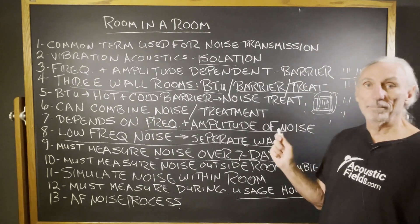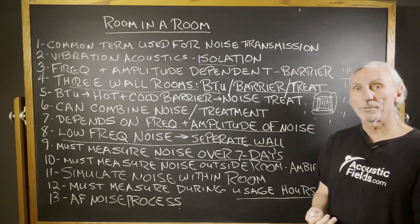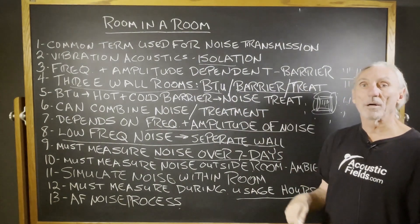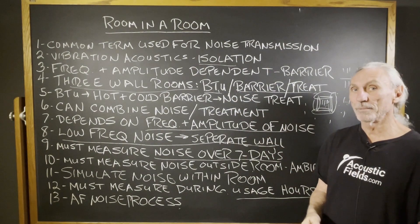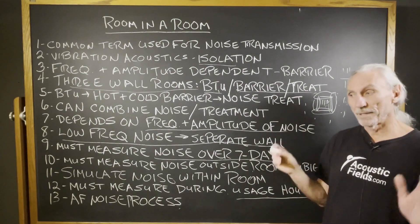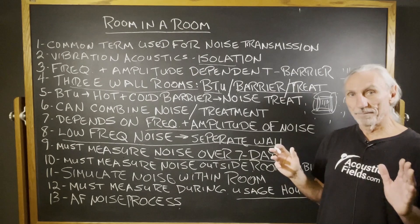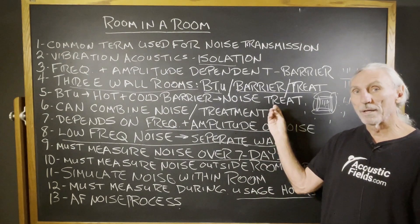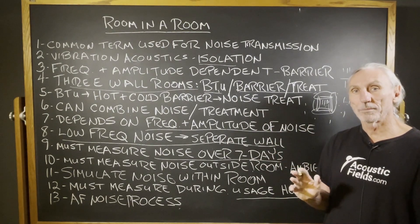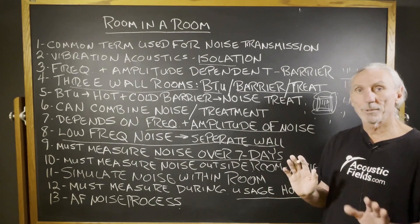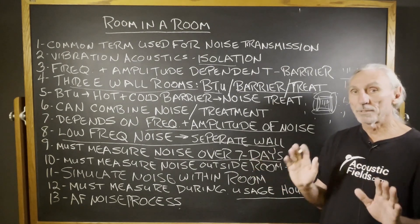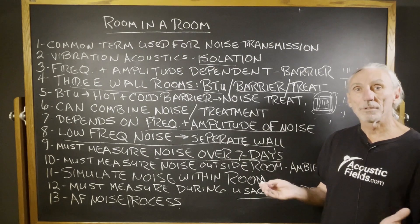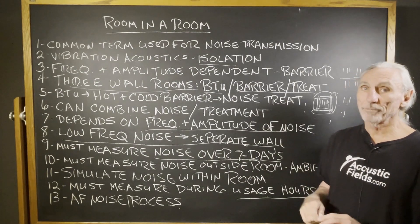Room within a room is usually a term we use for noise transmission. But as you can see, a BTU wall and a treatment wall are also a room within a room. Nothing's easy in acoustics — everything is a little bit difficult. Getting good sound quality in a room is about doing a lot of little things correctly, but more importantly, in the correct order. You can build the finest room in the world with the proper rates and levels of absorption and diffusion on the proper surfaces to match usage, do all your homework and do it all right — but if you have a noise issue, the room is ruined. So be very, very careful with noise.